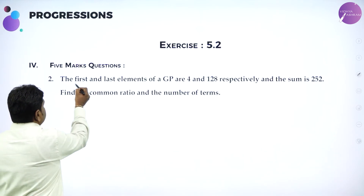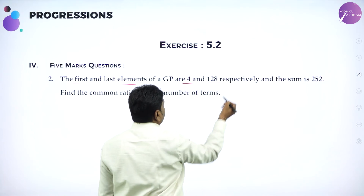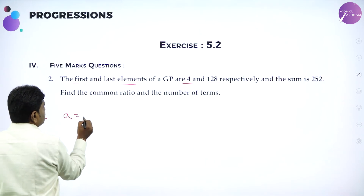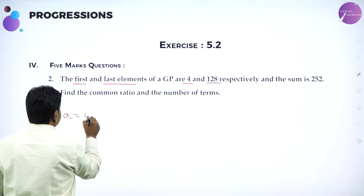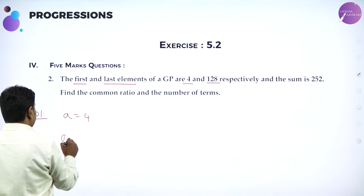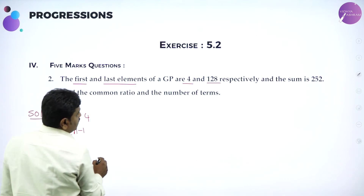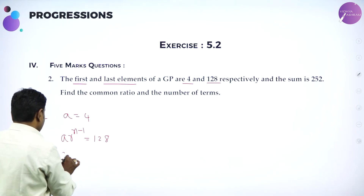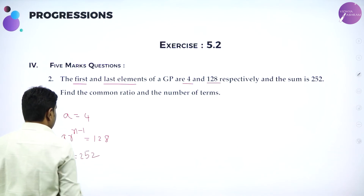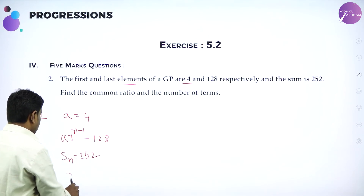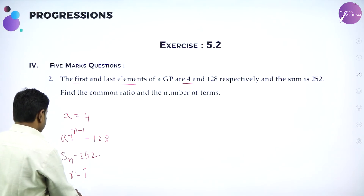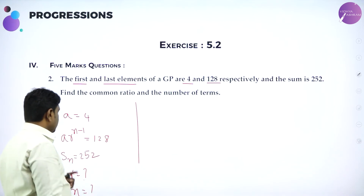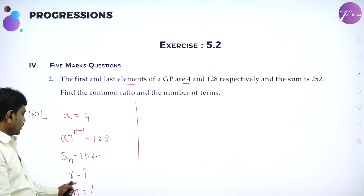The first and last term of a GP are 4 and 128. Sum is 252. They want you to find the common ratio and the number of terms. So: first term A = 4, last term A × r^(n−1) = 128, and Sn = 252. From A × r^(n−1) = 128, substituting A = 4: 4 × r^(n−1) = 128, so r^(n−1) = 32.